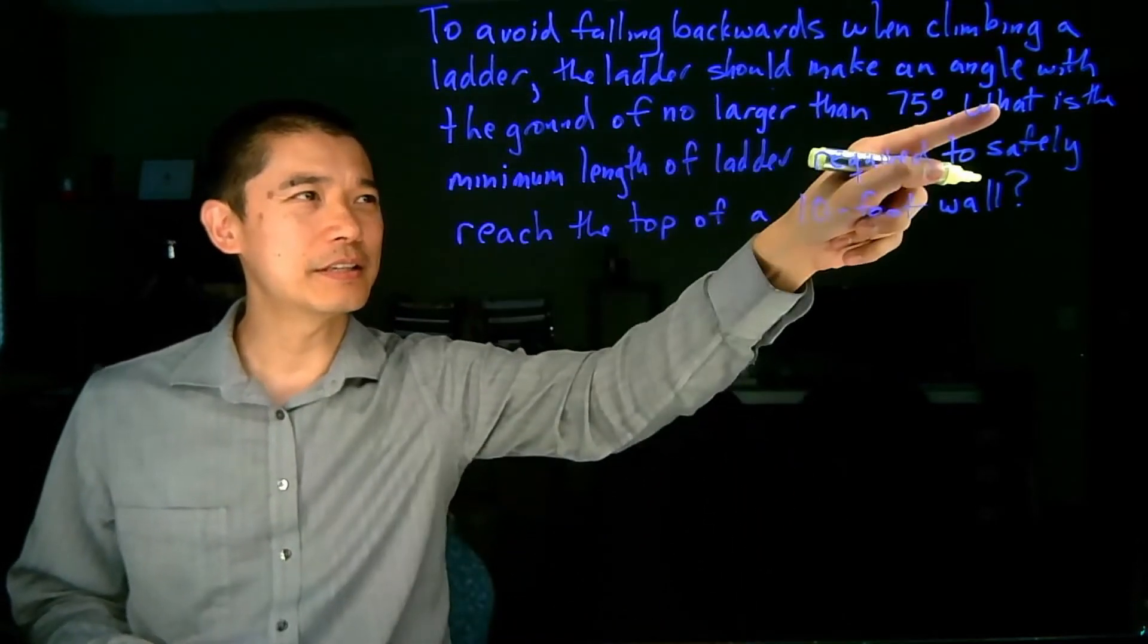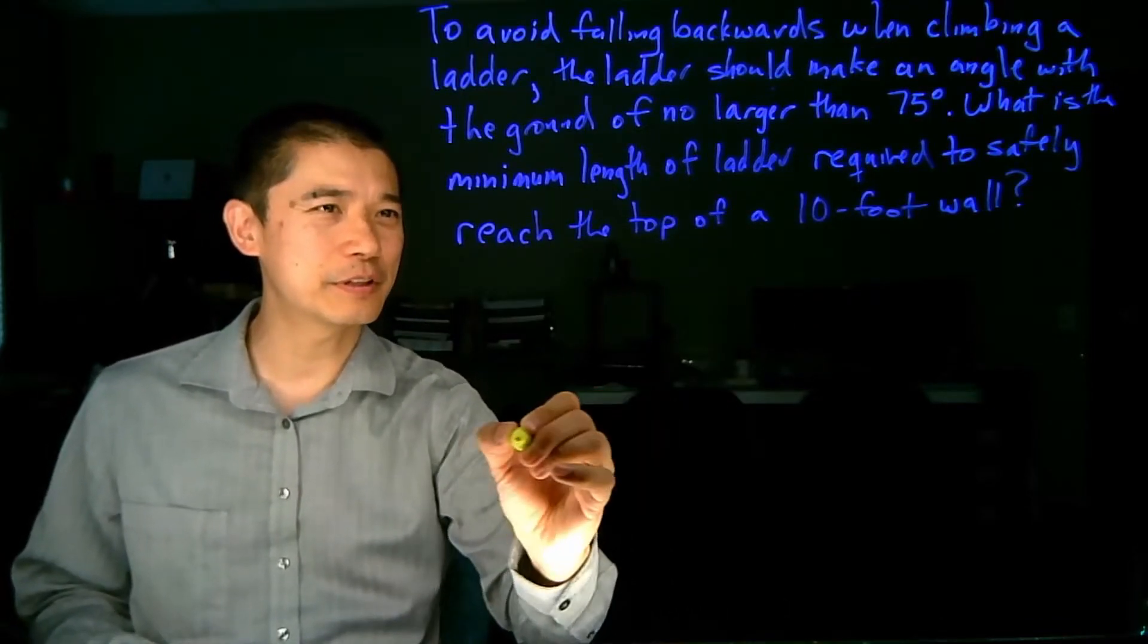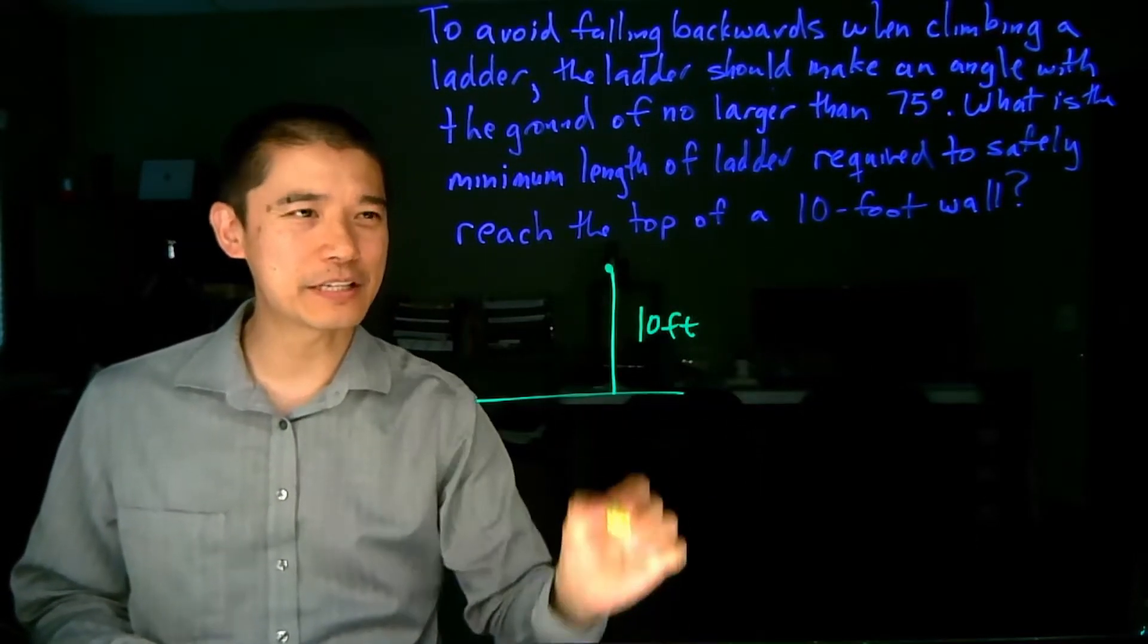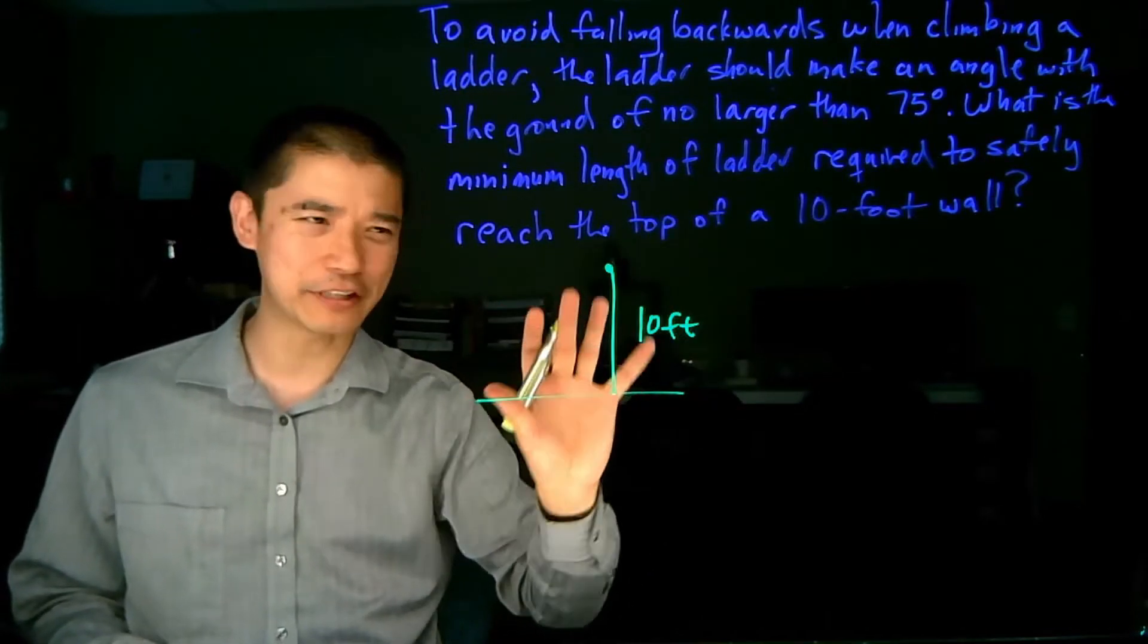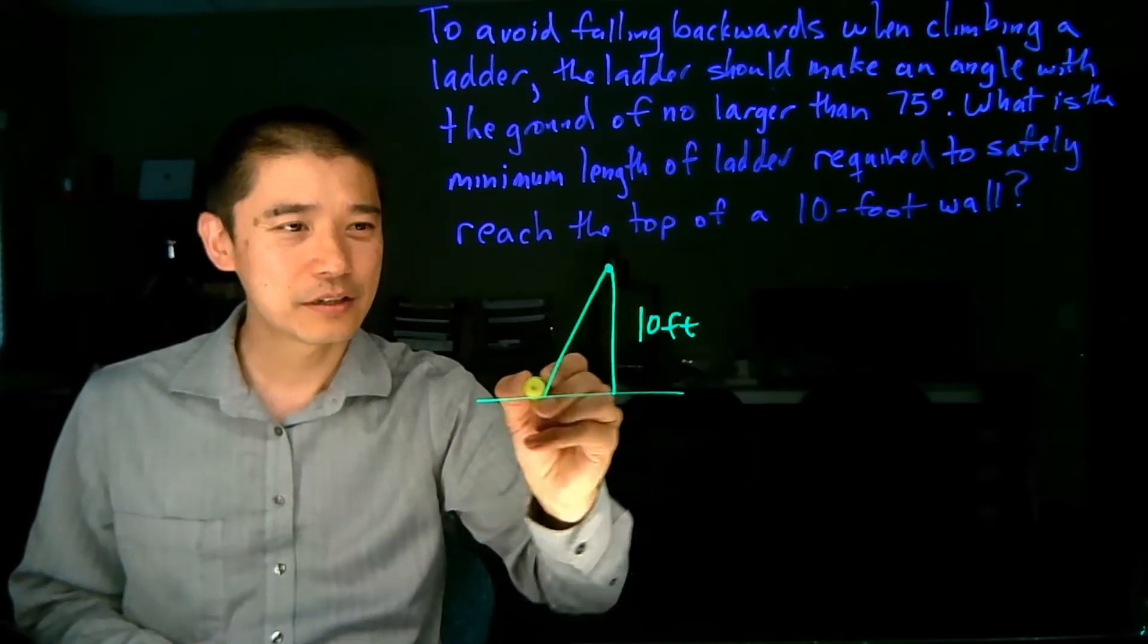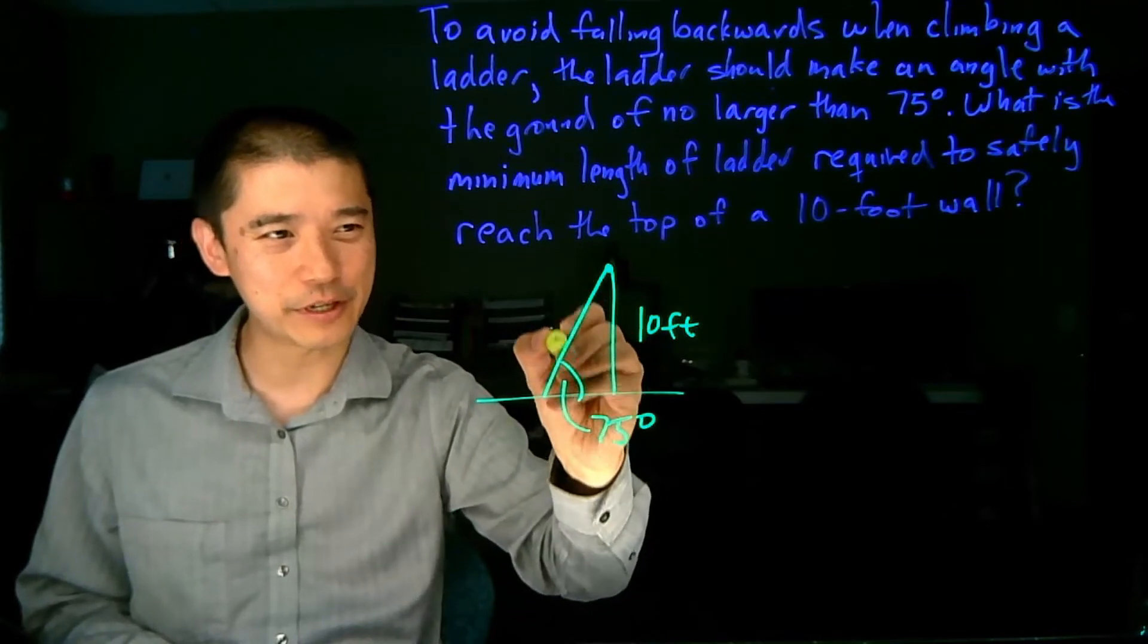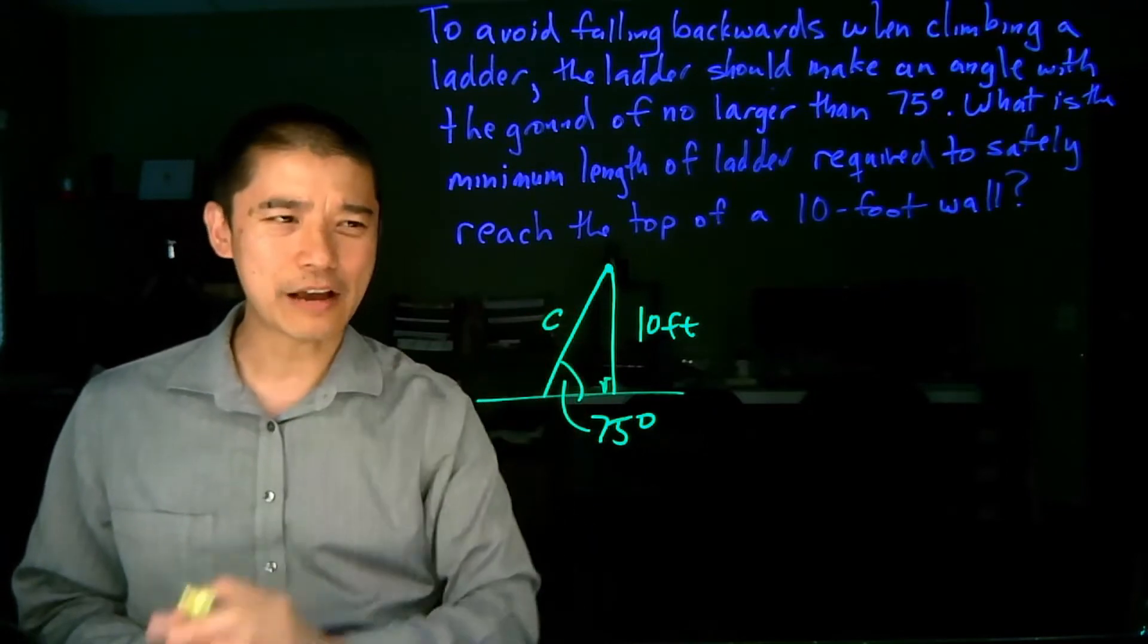Now what is it saying? We are trying to make, let's see, the angle can be no larger than 75 degrees. What is the minimum length of ladder required to safely reach the top of a 10 foot wall? So here's our 10 foot wall. We're trying to reach the top of this, and we want to find the minimum length of ladder to safely reach the top of the wall. So we could get a 10 foot ladder and just slam it right up against the wall, but it will probably fall when we try to climb it. So we want a 75 degree angle, because this angle will make it the shortest possible ladder, and we're trying to figure out this length right here, which we'll call c, because it looks like the hypotenuse of a right triangle.